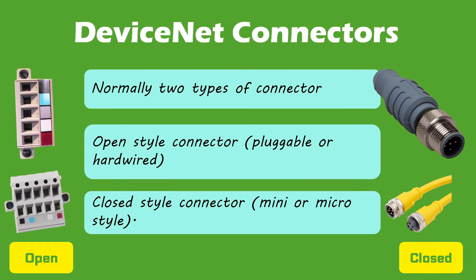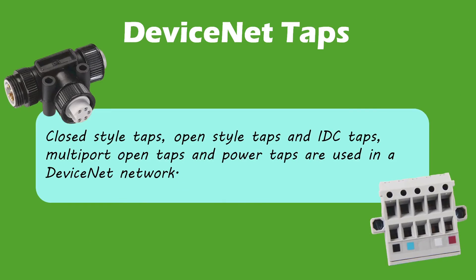Normally, two basic types of connectors are used in DeviceNet: open style connectors (pluggable or hardwire) and closed style connectors (mini or micro style). Different types of taps are used in a DeviceNet network: closed style taps, open style taps, IDC taps, multi-port open taps, and power taps.